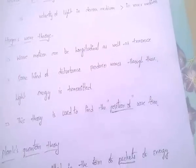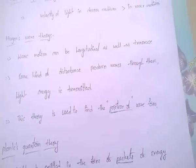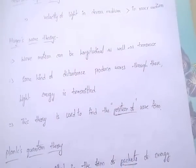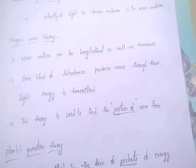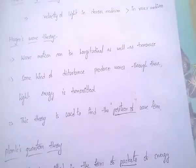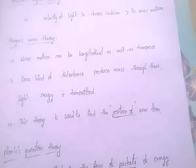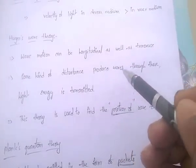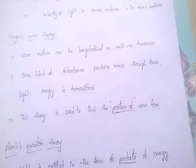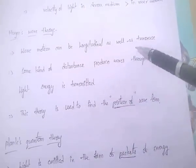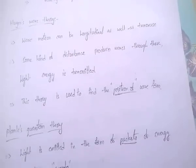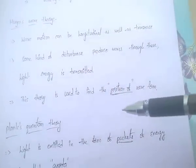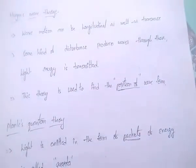According to Huygens wave theory, wave motion can be longitudinal as well as transverse. Here, wave means light waves. Some kind of disturbance produces waves, and through these waves light energy is transmitted. This theory is used to find the position of the wave form.